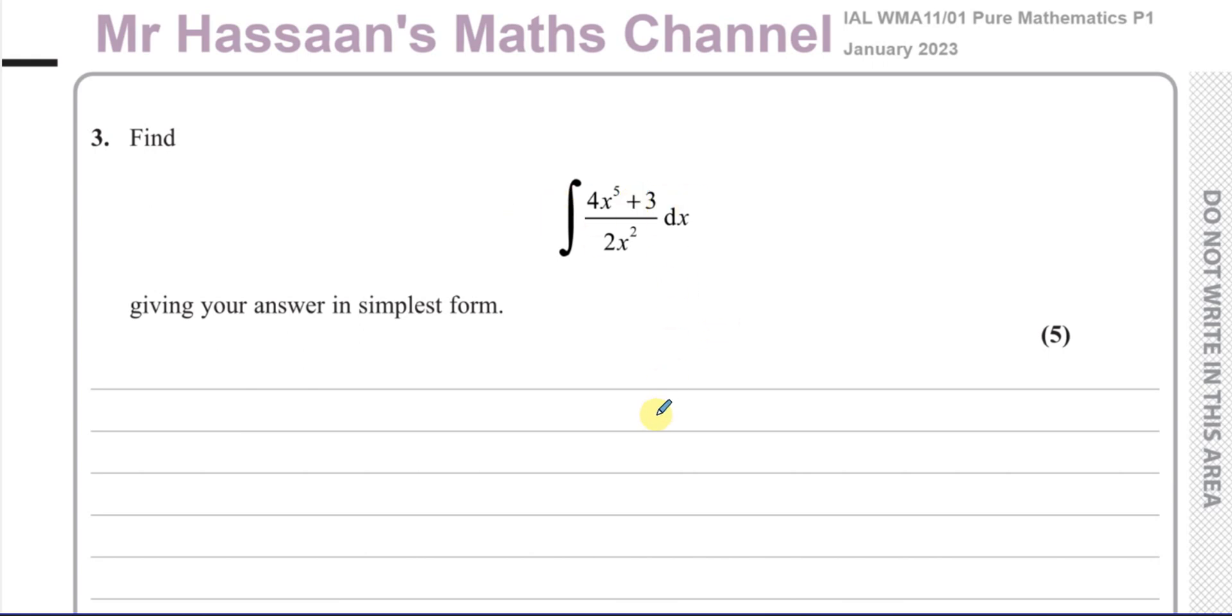So the first thing we do is we split this up into separate fractions. So I'm going to take 4x to the power of 5 plus 3 over 2x squared. And I'm going to split it into two separate fractions. So it's like 4x to the power of 5 over 2x squared plus 3 over 2x squared.